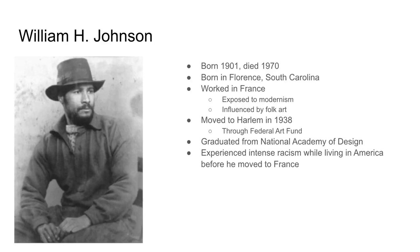The second artist we will be discussing is William H. Johnson, who was born in Florence, South Carolina in 1901 and passed away in 1970. Just like Jacob Lawrence, he was influenced by French style of art — he moved there early in life and was exposed to modernism, which is very similar to what we saw in the Migration of the Negro. He was also influenced by European folk art, which brought a simplicity to his work, expressing stories in simple terms so everyone can understand them.